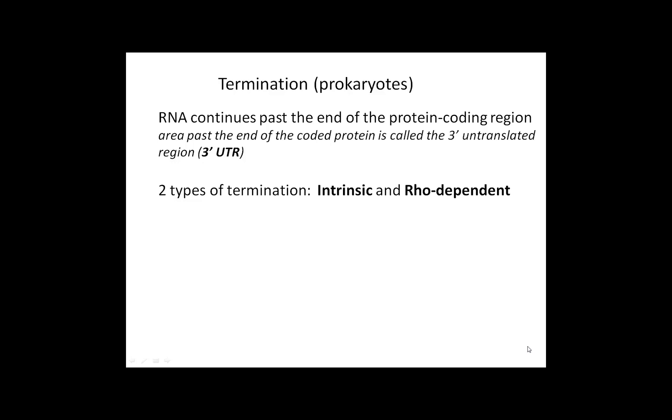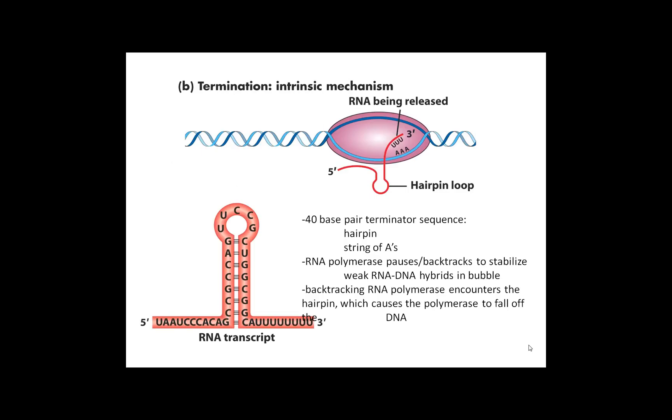The last stage of transcription is termination. Elongation is going to continue past the end of the protein coding region on the RNA and into this three prime untranslated region until it finally hits that termination sequence. In prokaryotes, there are two kinds of termination sequences: intrinsic and Rho-dependent.